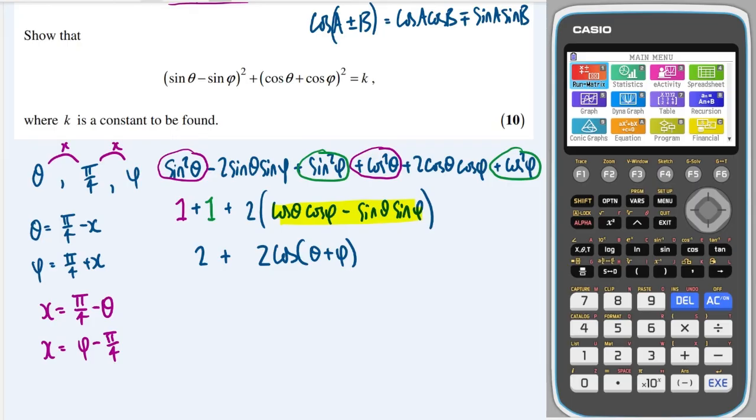And because these are both equal to x, I can set them equal to each other. So pi over four minus theta is equal to phi minus pi over four. And then rearranging this so I can get theta plus phi on this side and add pi over four to that side, so two pi over four makes pi over two.